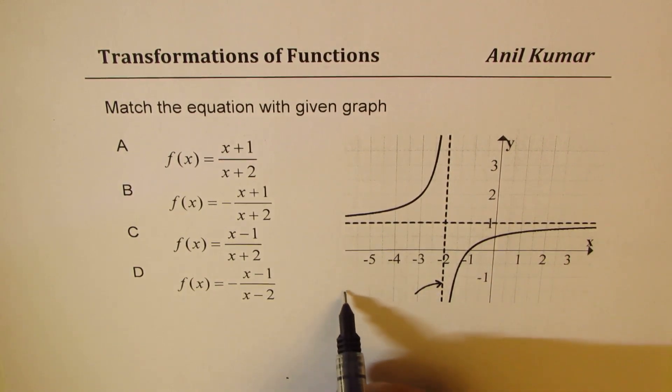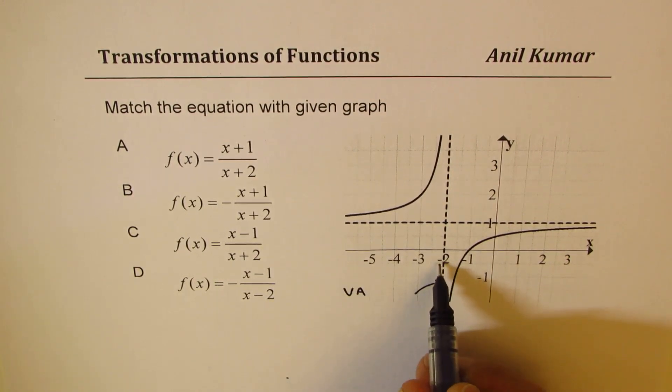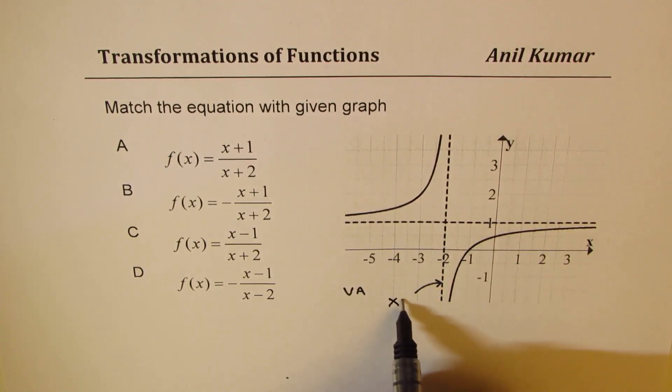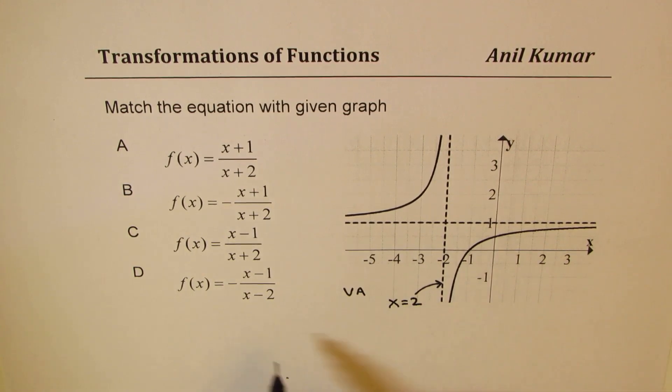that the vertical asymptote is at x = -2. So this equation is x = -2, and therefore in the denominator we have a factor x + 2.